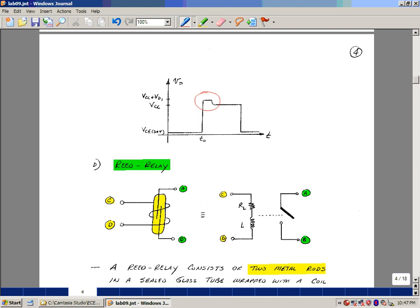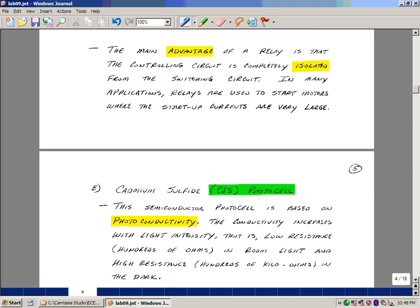The main advantage of using a relay is that the controlling circuitry is physically isolated from a high energy load. So you'll see things like this in automobiles where you've got a car battery which is a very low voltage but has an enormous amount of energy stored in it.